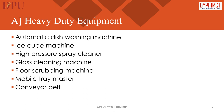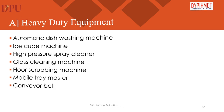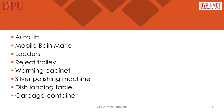A list of heavy duty equipment generally used in a large hotel includes: Automatic Dishwashing Machine, Ice Cube Machine, High Pressure Spray Cleaner, Glass Cleaning Machine, Floor Scrubbing Machine, Mobile Tremaster, Conveyor Belt, Auto Lift, Mobile Ben Murray, Loaders, Reject Trolley, Warming Cabinet, Silver Polishing Machine, Dish Landing Table, and Garbage Container. Some useful tips on the use of this equipment: temperature of water for washing is 40°C to 100°C; to kill bacteria, rinse water is to be heated to 180°C.